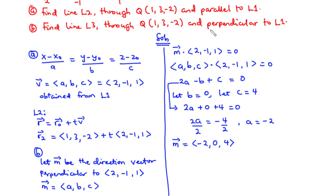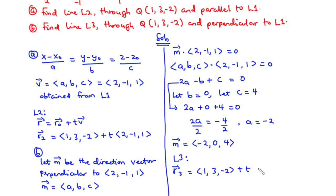We now have the direction vector perpendicular to L1. What we are left to do is find the line L3. For line L3, we have R3 equals — the line passes through Q, so we have 1, 3, negative 2 — plus T times (negative 2, 0, 4). This is the vector equation of line L3. That's it for today's video. Thanks for watching and see you in my next video. Bye-bye.